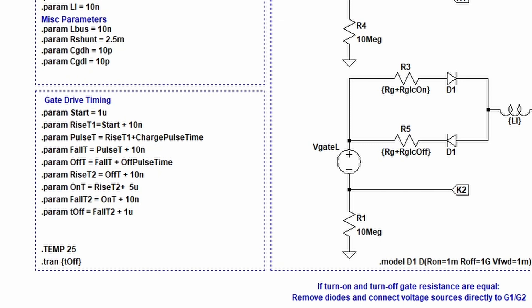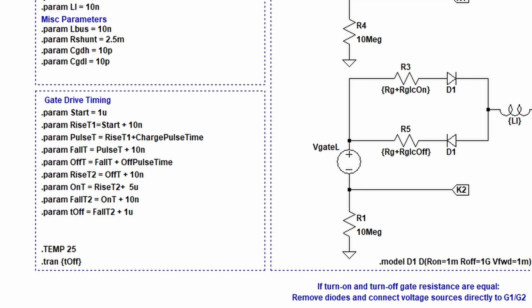The temperature can also be set with the global LTSPICE temperature by editing the dot temp parameter. Any other parasitics can also be added to the system, such as commutation loop inductance. Now let's run an actual double pulse test and analyze our waveforms.